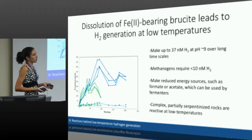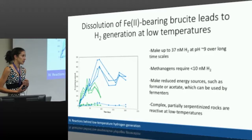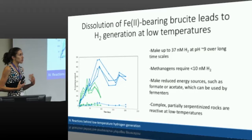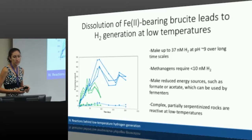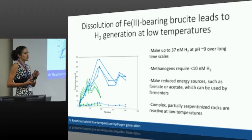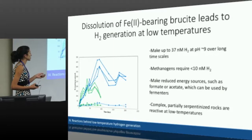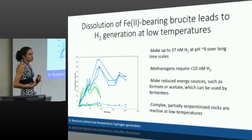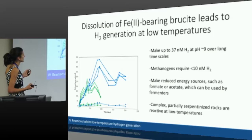Overall, we propose a reaction mechanism for low temperature serpentinization. We believe the dissolution of iron two-bearing brucite is leading to hydrogen generation at these low temperatures. Because this rock was already partially serpentinized, questions arise about whether it's even still reactive and whether iron two is still available for oxidation — and yes, it is, coming out of brucite. These reactions can make up to 37 nanomoles of hydrogen dissolved in the fluid, which is more than enough to support a microorganism since methanogens require much lower levels. These reactions also make reduced energy sources such as formate and acetate, which can support fermenters living in the subsurface. That's how we think low temperature hydrogen generation is happening in Oman.